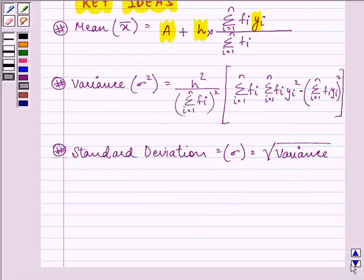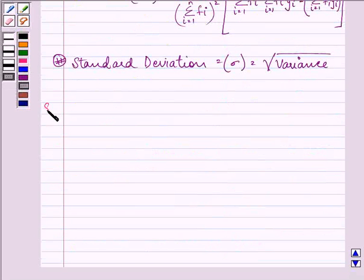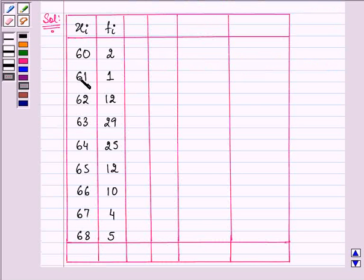Let us firstly make a table in which we will write down the xi and fi which are given to us. Here we have xi and fi.